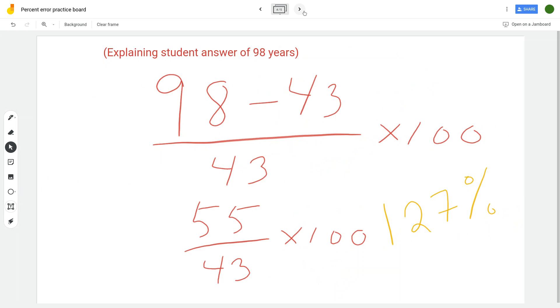Okay, now last year I had a student who guessed 98 years and I think they were just joking around trying to be funny. Didn't take it personally, and in fact it's actually a great example of how to illustrate what a large percent error would be. All right, so we do 98 minus 43, that's 55, and put that over 43.